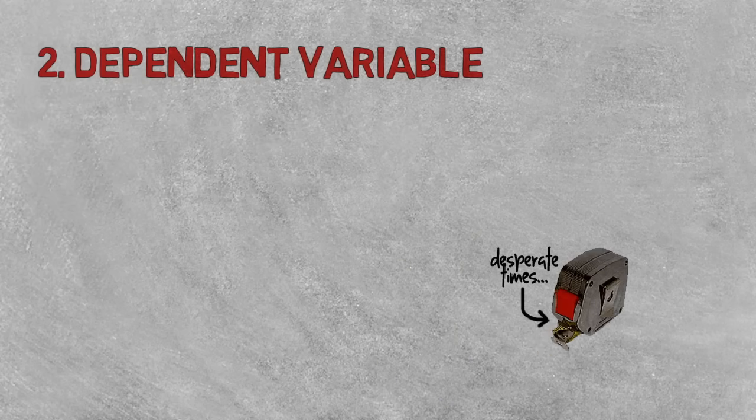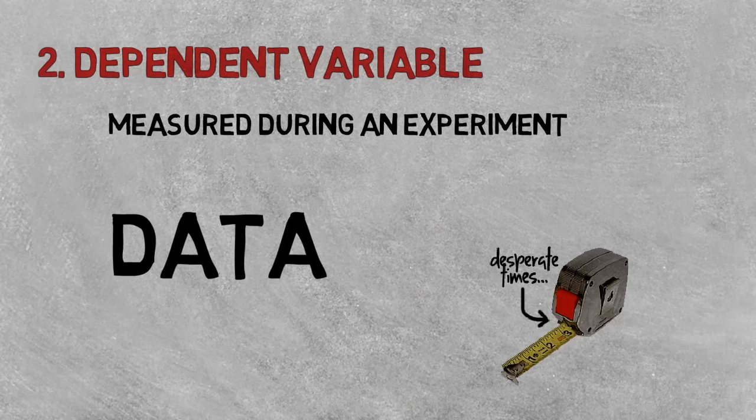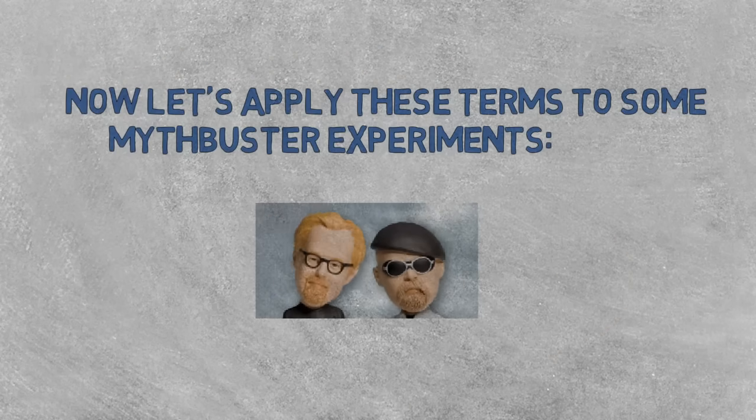The dependent variable is the thing being measured during an experiment, also called data. Now let's break down some MythBuster experiments.